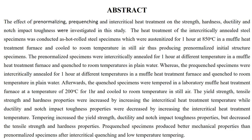The quenched specimens were tempered for one hour at a temperature of 200 degrees Celsius, and cooled to room temperature in still air. The yield strength, tensile strength, and hardness properties were increased by increasing the intercritical heat treatment temperature, while ductility and notch impact toughness properties were decreased by increasing the intercritical heat treatment temperature. Tempering increased the yield strength, ductility and notch impact toughness properties, but decreased the tensile strength and hardness properties. Pre-quenched specimens produced better mechanical properties than pre-normalized specimens after intercritical quenching and low-temperature tempering.